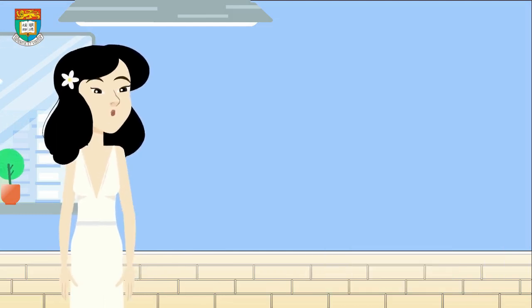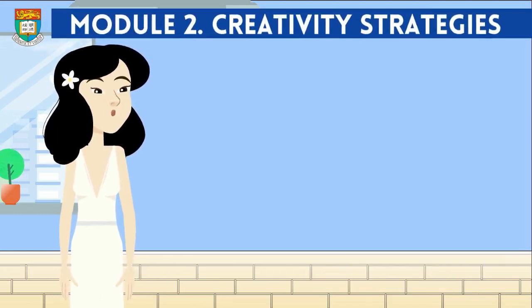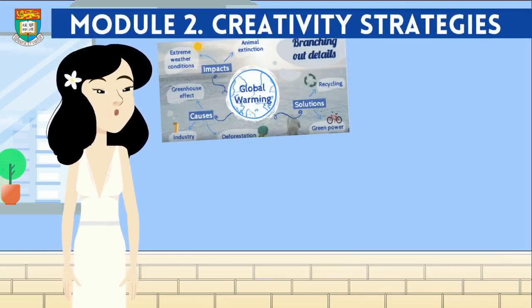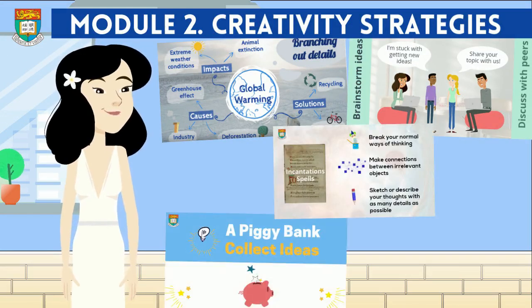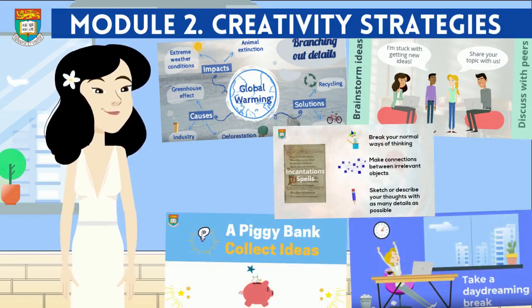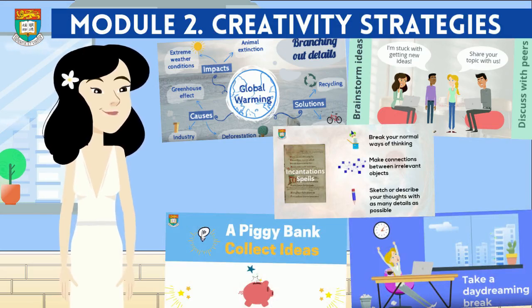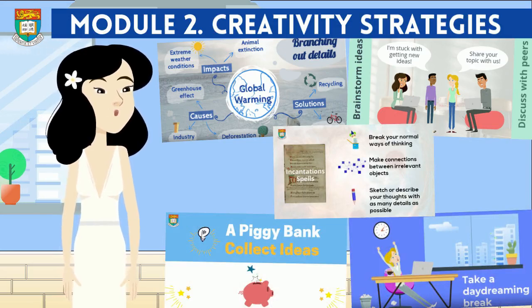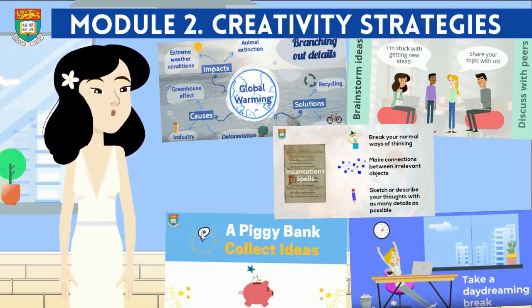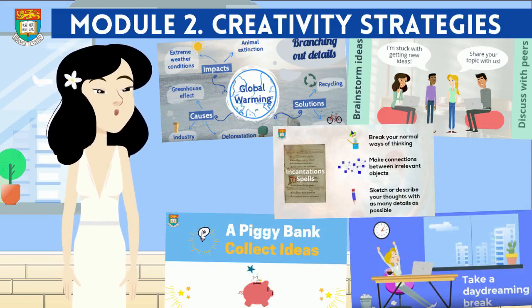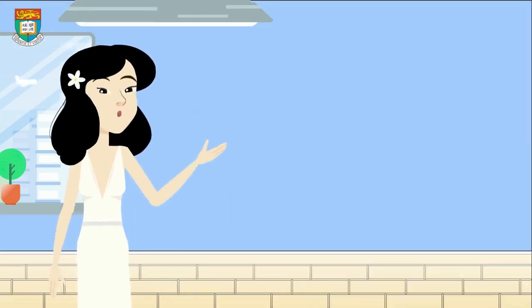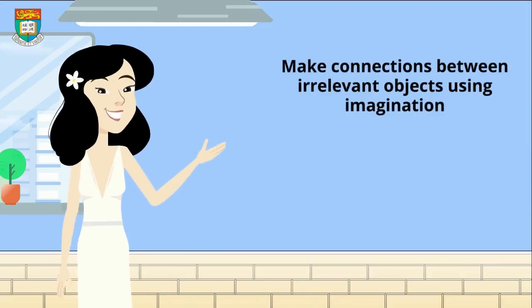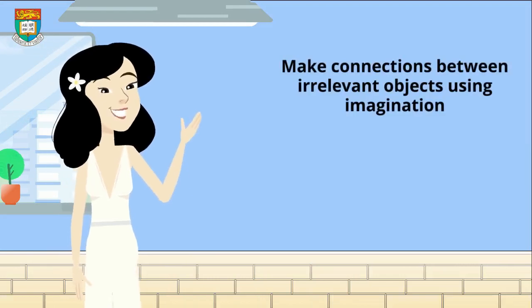Do you still remember, in Module 2 we identified five useful strategies for you to cultivate creative habits in daily life? Which of them did you adopt when you developed this creative story, or which of them would you like to use? Let's take one strategy for example: making connections between irrelevant objects.